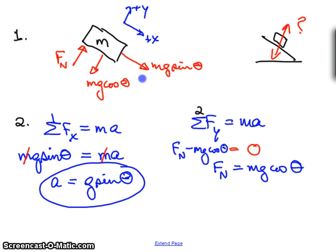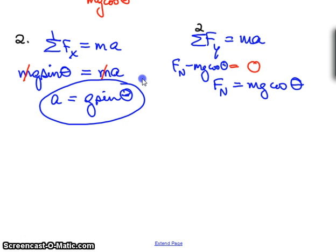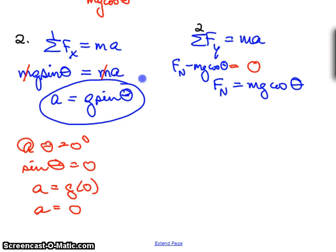The acceleration is zero. So at theta equals zero degrees, the sine of theta equals zero. So a equals g times zero. There is no acceleration. So that makes sense.